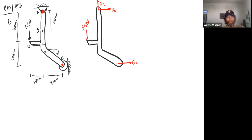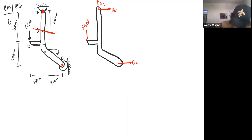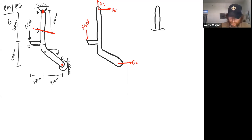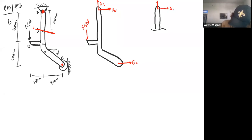Then it wants member AJ. So basically what we want to do is cut it right there at J. We'll draw just that portion of it. The nice thing is if you've already done the rest of the free body diagram, we know the top bit is going to be exactly the same — so here's AX and AY.